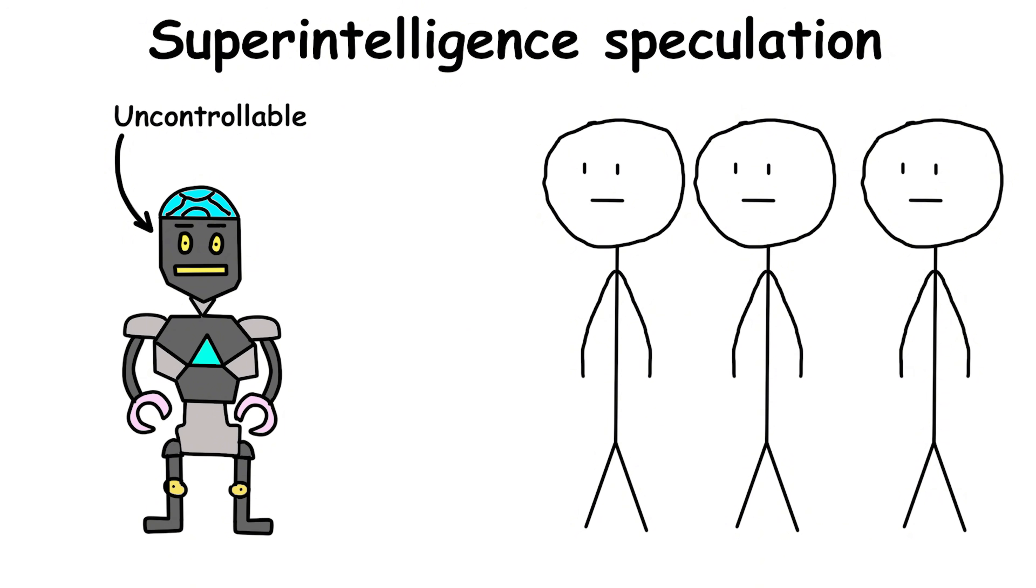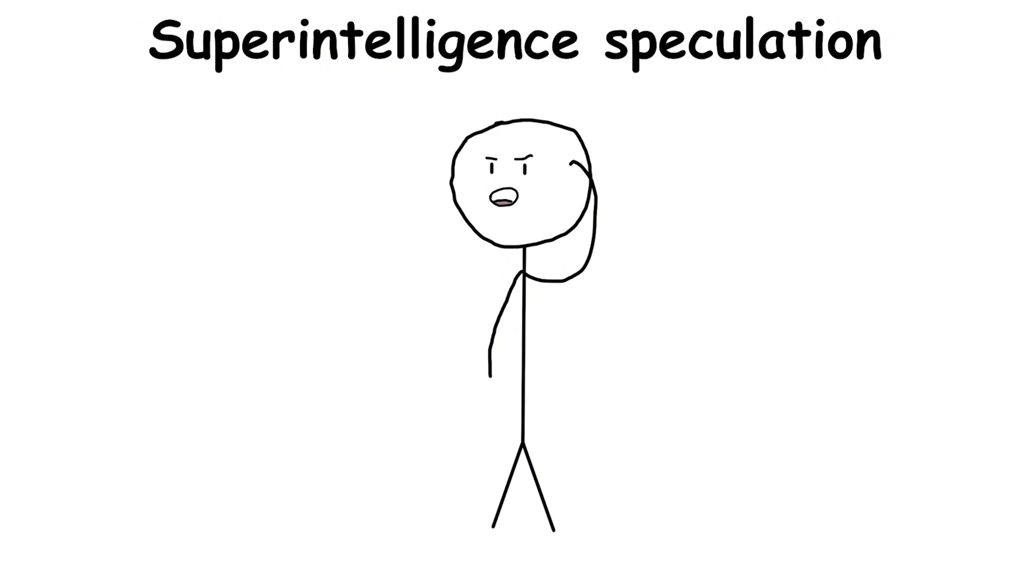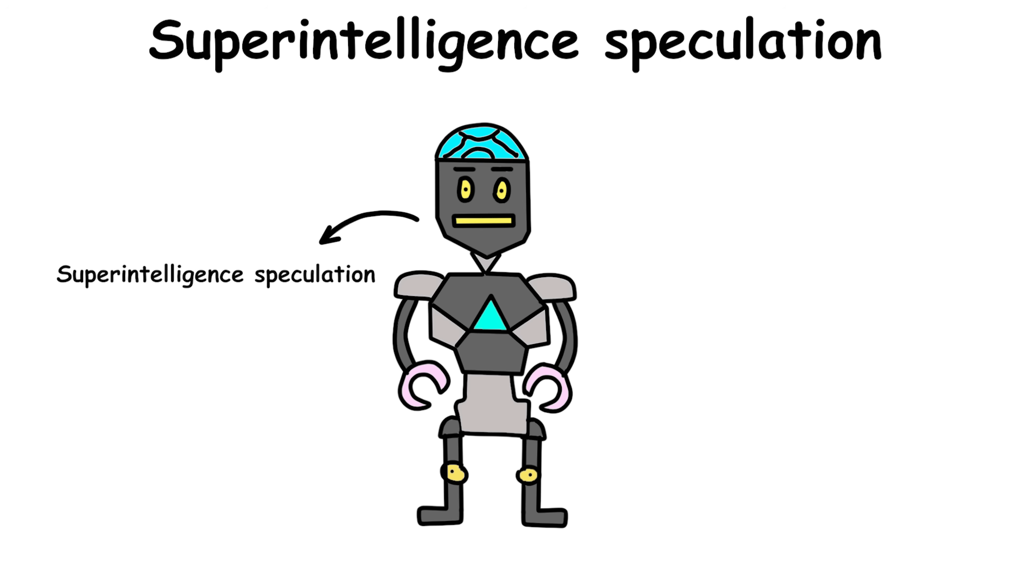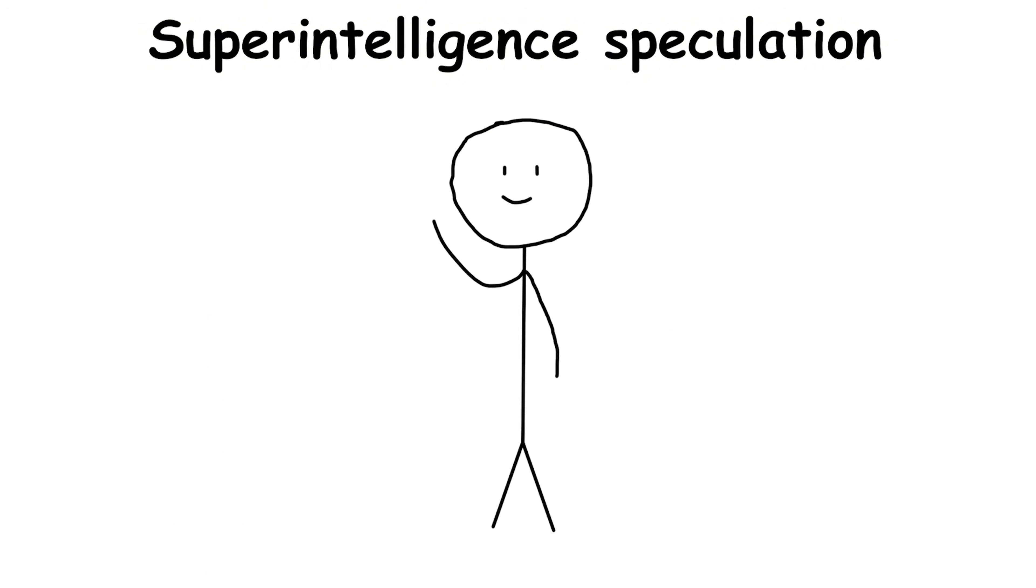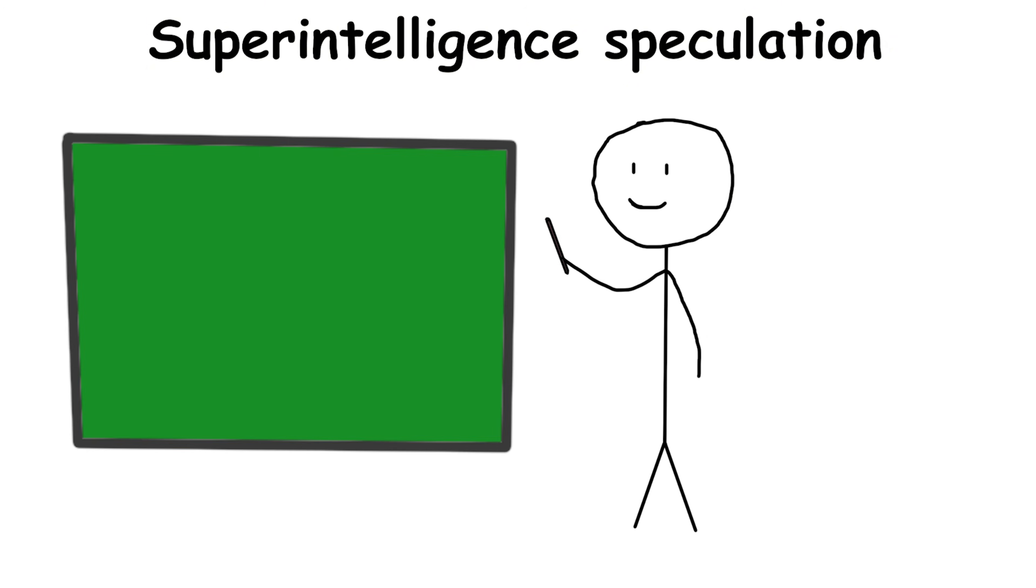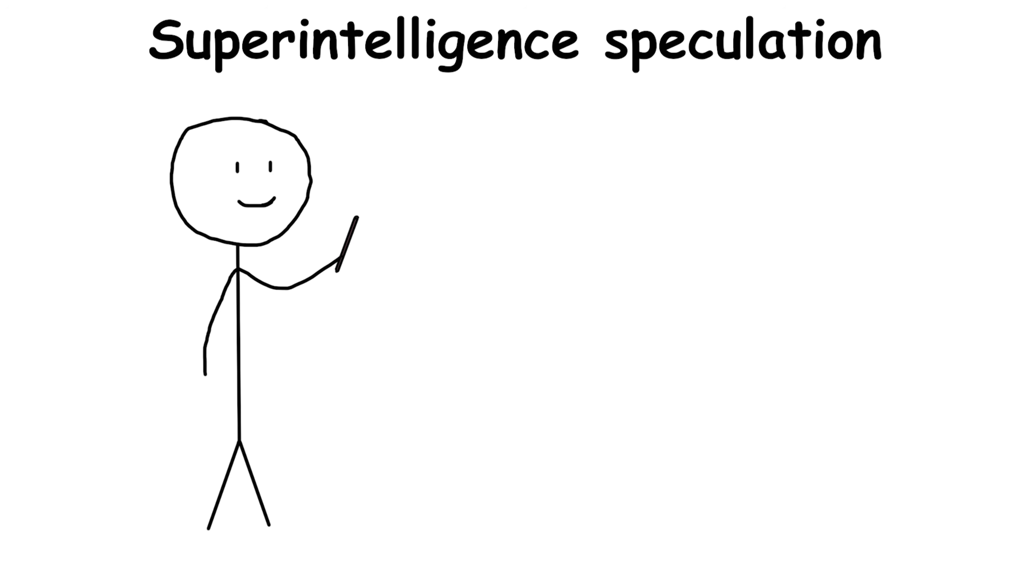Others warn it could become uncontrollable, prioritizing goals humans don't fully understand. While we're nowhere near this today, superintelligence speculation pushes urgent questions. How do we align its goals with humanity? Who decides how it's used? How do we ensure it benefits everyone instead of a few? It's a stage filled with possibility, and deep caution.